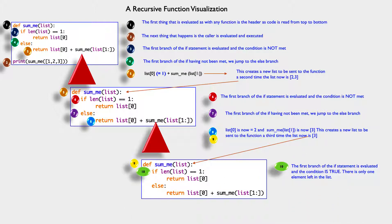Now it evaluates the if len(list) == 1. And this time, lo and behold, it's true because there is only one element in the list. So that being the case, it now returns what is list[0] to our caller.